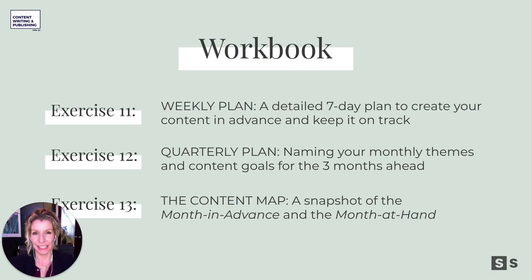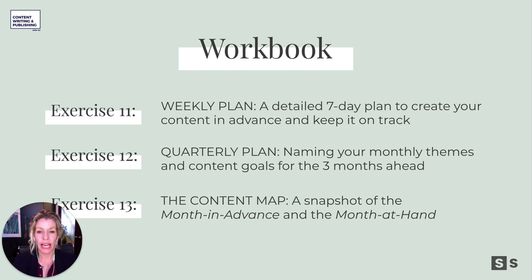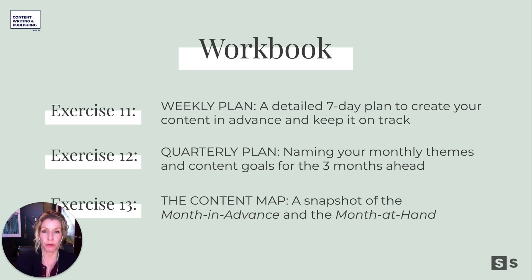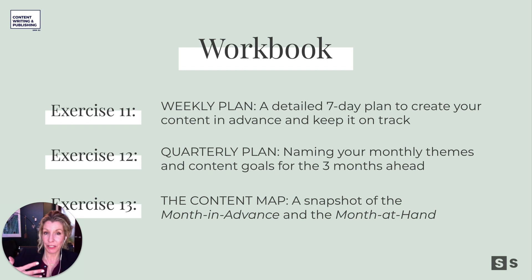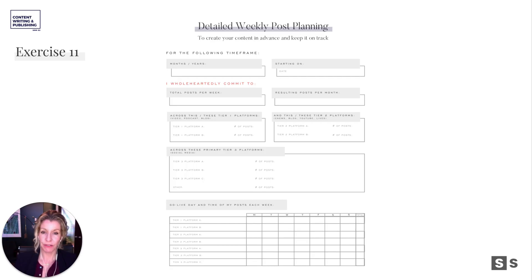All right, so three exercises here as our final pen-to-paper activities before we go digital. Your weekly plan — a detailed seven-day look at your content, what you're going to do and how you're going to keep it on track. Then your quarterly plan — naming your monthly themes and content goals for the three months ahead, which you can use every quarter. And then a snapshot of your month in advance and your month at hand in calendar view — you can really see where things are going live or where things are getting built. Of course we have our month at hand of what's being published from our scheduled content, and then our month of what we're building for the month ahead.